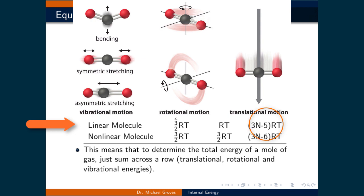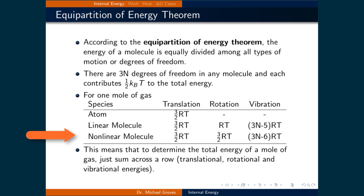The total contribution from vibrational states for a linear molecule is three n minus five — the total number of vibrational states — times RT, the total energy of each vibrational state. The non-linear molecule follows similar logic, only now it can rotate around all three axes, so there is one extra one-half RT of rotational energy. As a result, there is one fewer vibrational degree of freedom.